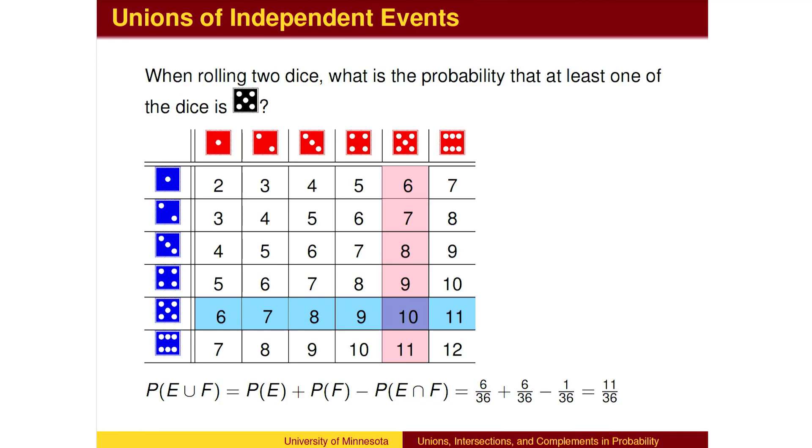When both dice are 5, we counted it in the blue row AND in the red column. We need to adjust for this by subtracting the double counting, the intersection. The correct answer is to add the probabilities of E and F, then subtract the overlap. If E and F are mutually exclusive, then there is no overlap and we have our original formula.